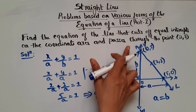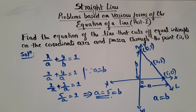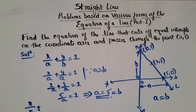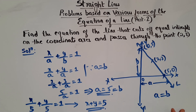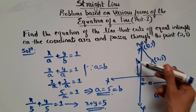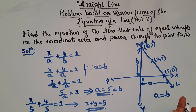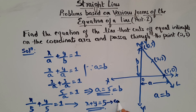Now it's easy to find the equation of this line. Since we know the intercepts, we can use intercept form: x/5 + y/5 = 1, which simplifies to x + y = 5. So this is the equation of line L.